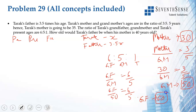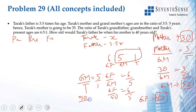Grandfather is 60, grandmother is 50, mother is 30. For Tarak: grandmother/Tarak = 5/1, so 50/Tarak = 5/1, giving Tarak = 10. Tarak is 10 and father is 3.5 times Tarak's age, so father = 3.5 × 10 = 35.